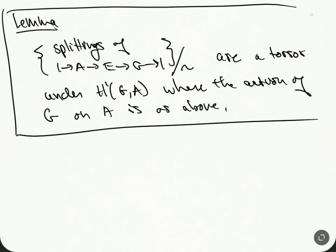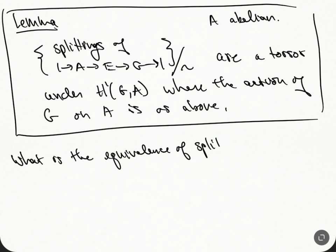So this is what I want to prove. I want to show that all the splittings are actually a torsor under group cohomology. This group cohomology is given with respect to the left action that I just described, which is independent of the splitting. And here, A is abelian. I also need to define what it means for two extensions to be equivalent.